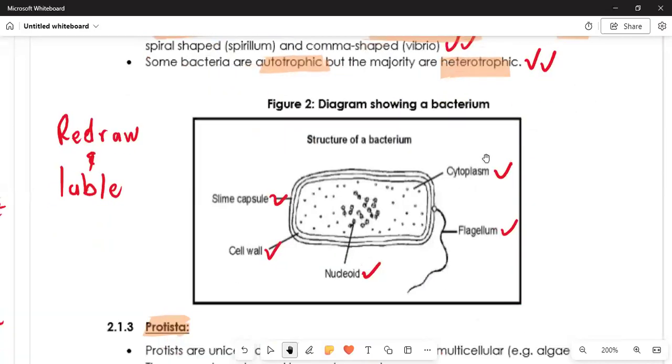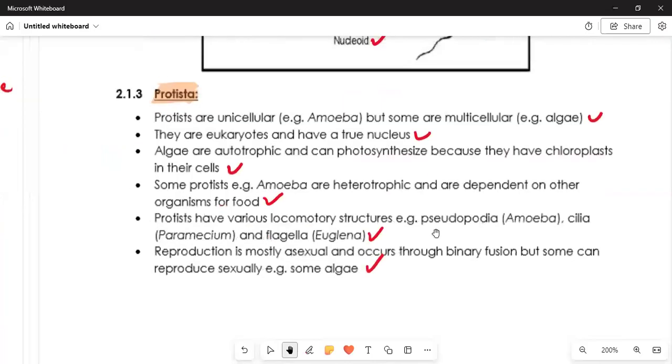We must understand that bacteria, they are autotrophic but the majority are heterotrophic. Remember that the structure would be given to you and you need to label the structure. I have said it time and again, for you to master this structure you need to redraw them over and over again. First of all we've got the slime capsule in the bacteria which protects. At the inner side of the cell we've got the cell wall. Then we have the nucleoid which carries a certain genotype. Then we talk about the flagellum which helps facilitate the movement of the bacteria to move from one place to another. Then we have the cytoplasm. Remember in the cytoplasm, it should be moist at all times, it should be fluid.